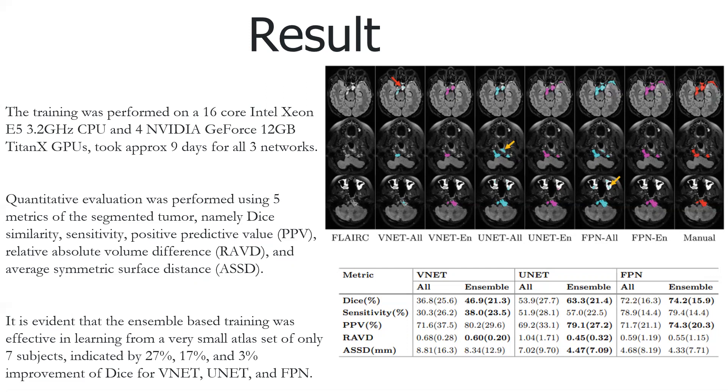Quantitative evaluation was performed using five metrics of segmented tumor: Dice similarity, sensitivity, positive predictive value (PPV), relative absolute volume difference (RAVD), and average symmetric surface distance (ASSD). Here we can clearly see the ensemble-based training was effective in learning from very small datasets of only seven subjects, indicated by 27%, 17%, and 3% improvement in Dice for V-Net, U-Net, and FPN respectively.